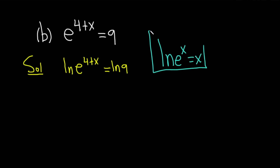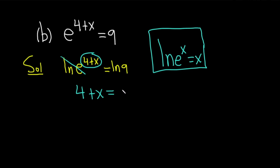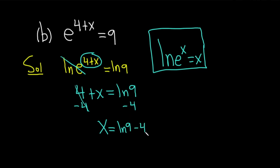This is super, super powerful. So in this particular case, this 4 plus x is our exponent. So basically the e and ln cancel, and we get 4 plus x equals the natural log of 9. Then we're just looking for x. We have a positive 4 here, so we subtract it from both sides. We get x equals the natural log of 9 minus 4. A really useful technique: whenever you have an e and you're trying to solve for the variable, just take the natural log of both sides, and you can get rid of the e and solve for x.